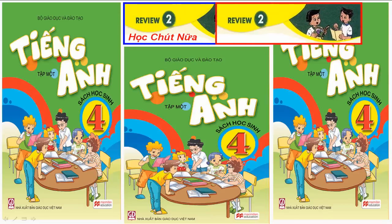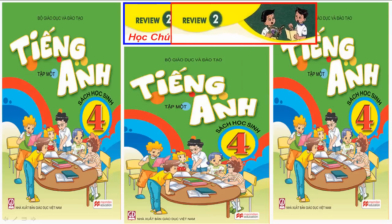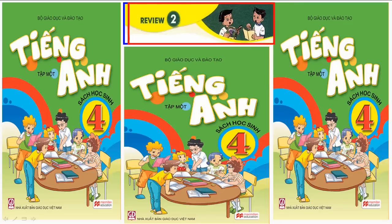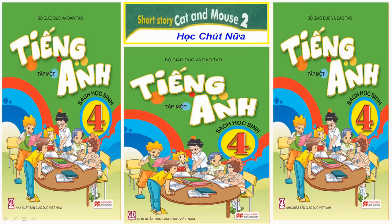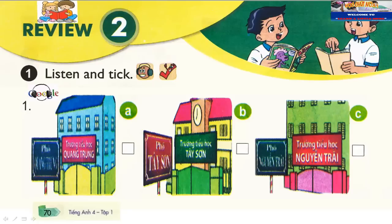English 4, Students' Book 1. Page 70. Review 2. Activity 1. Listen and tick.